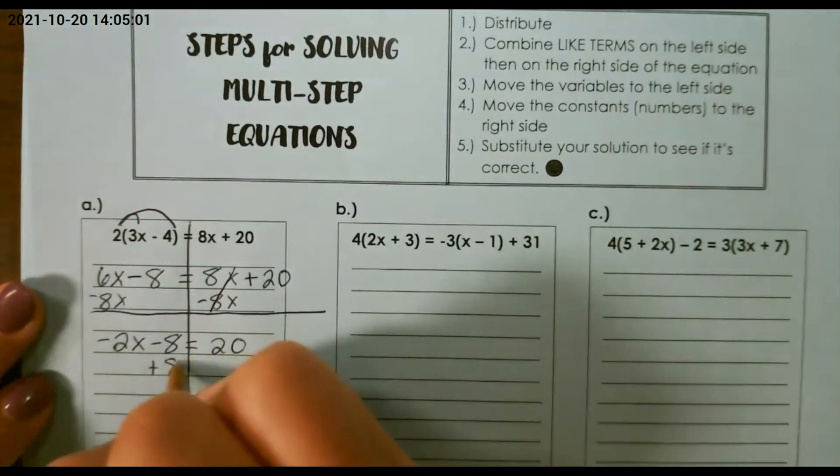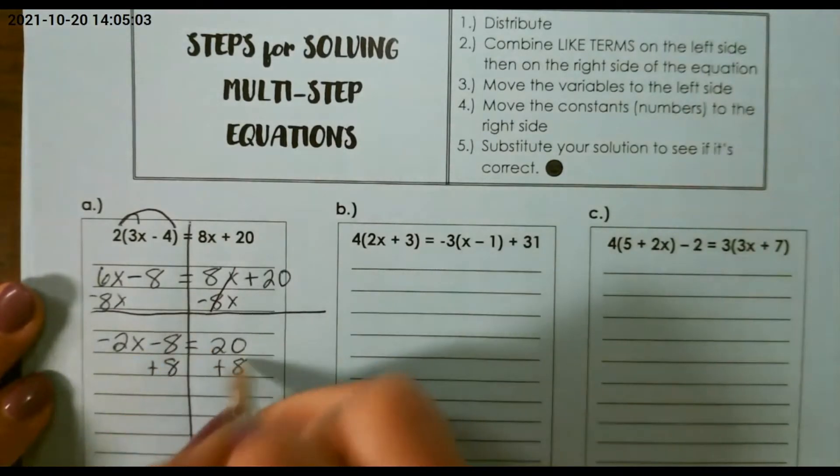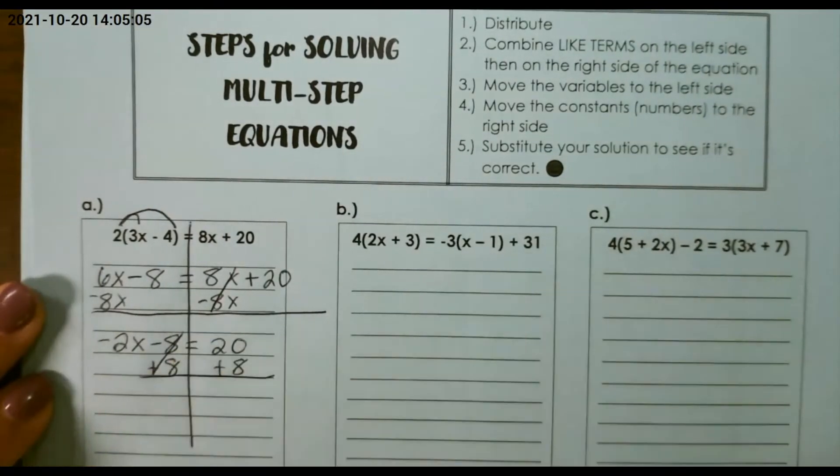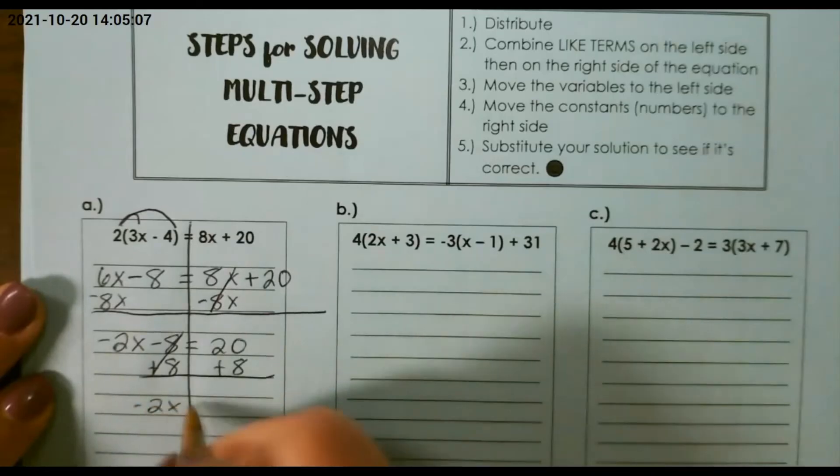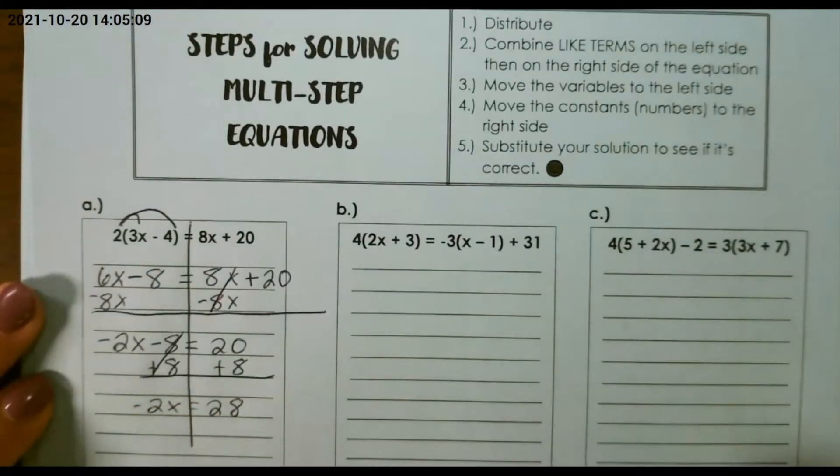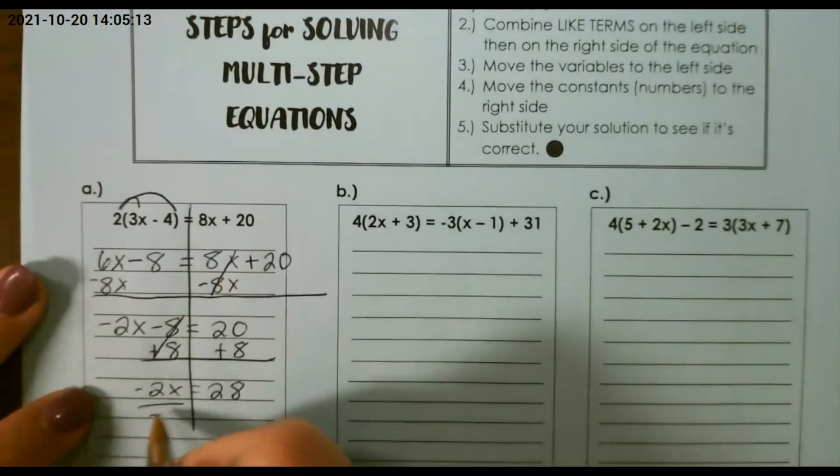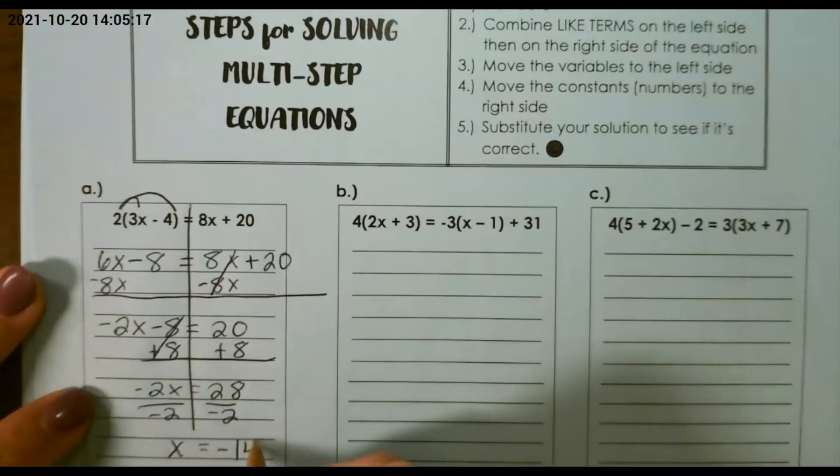Then I want to take my constant to the right hand side. So negative 2x equals 28, and we use the inverse operation, so that would be dividing by negative 2, so x equals negative 14.